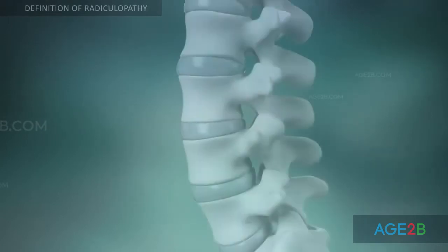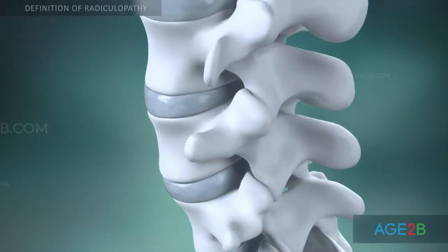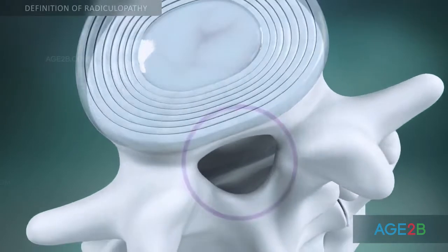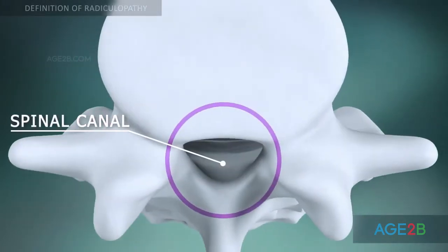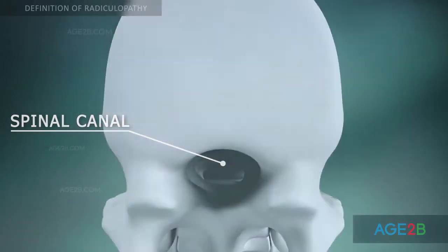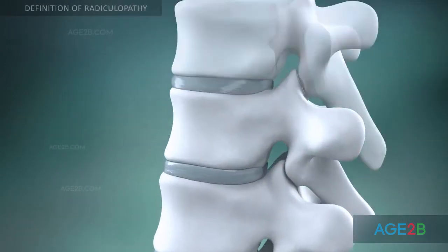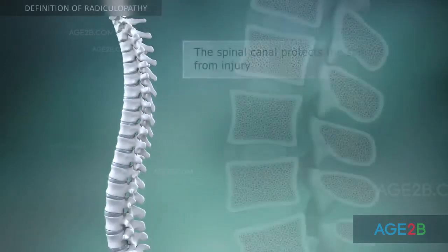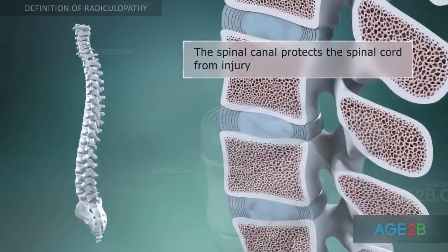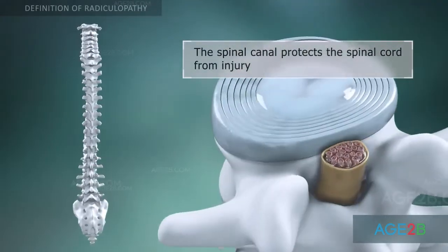A vertical tunnel, which contains the spinal cord, is located behind the vertebral bodies. This tunnel is known as the spinal canal. The spinal canal protects the spinal cord from injury.